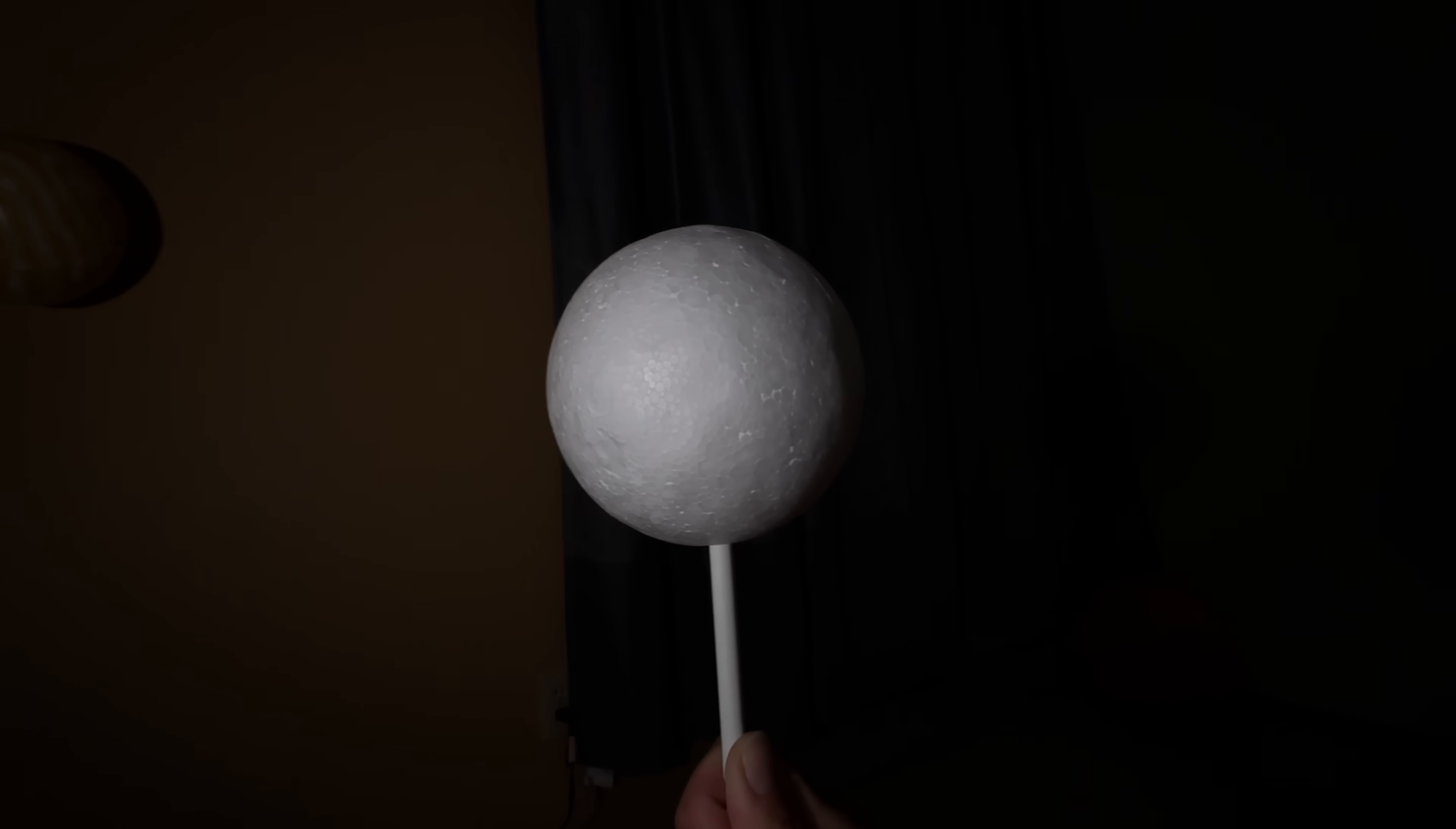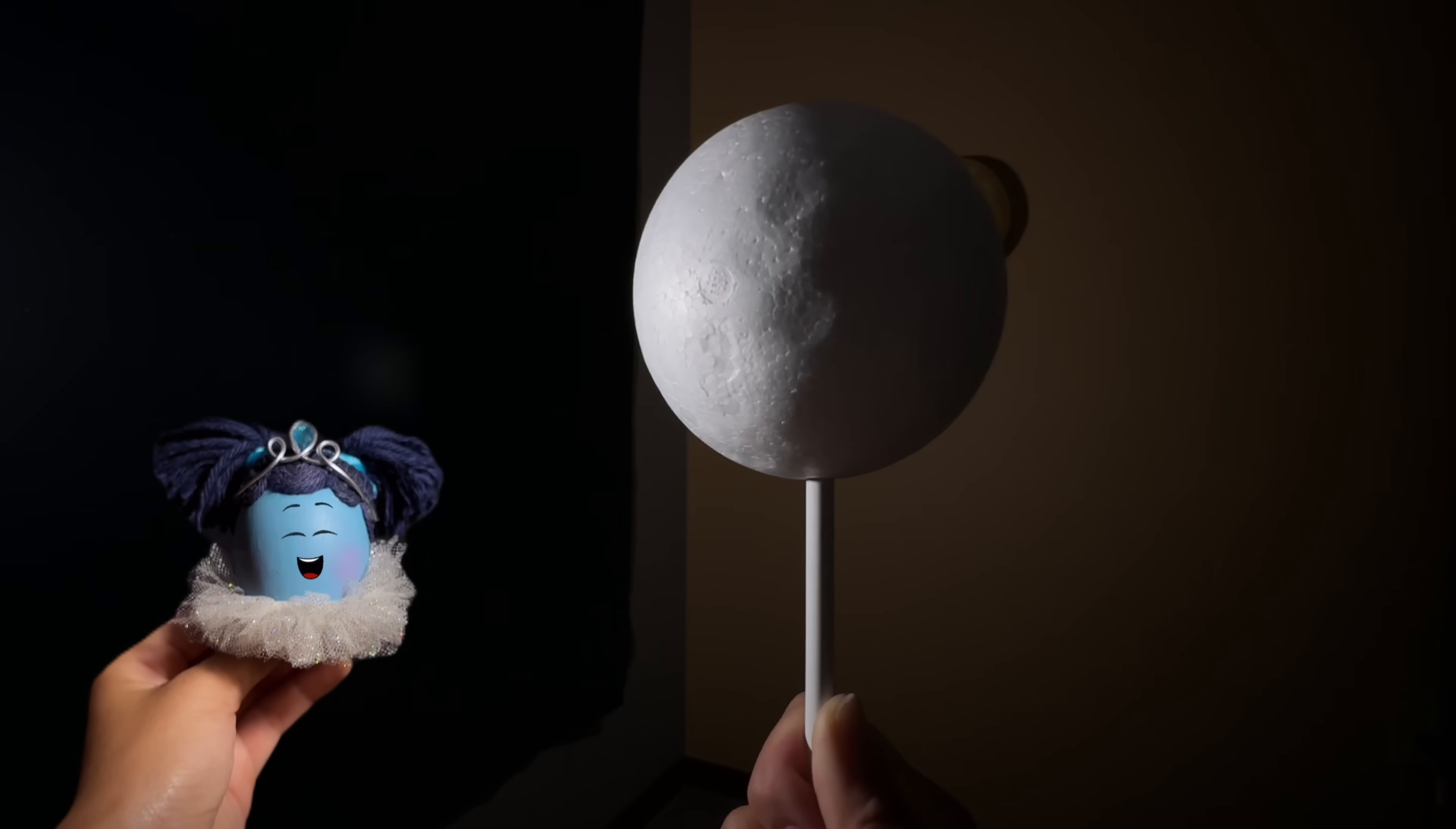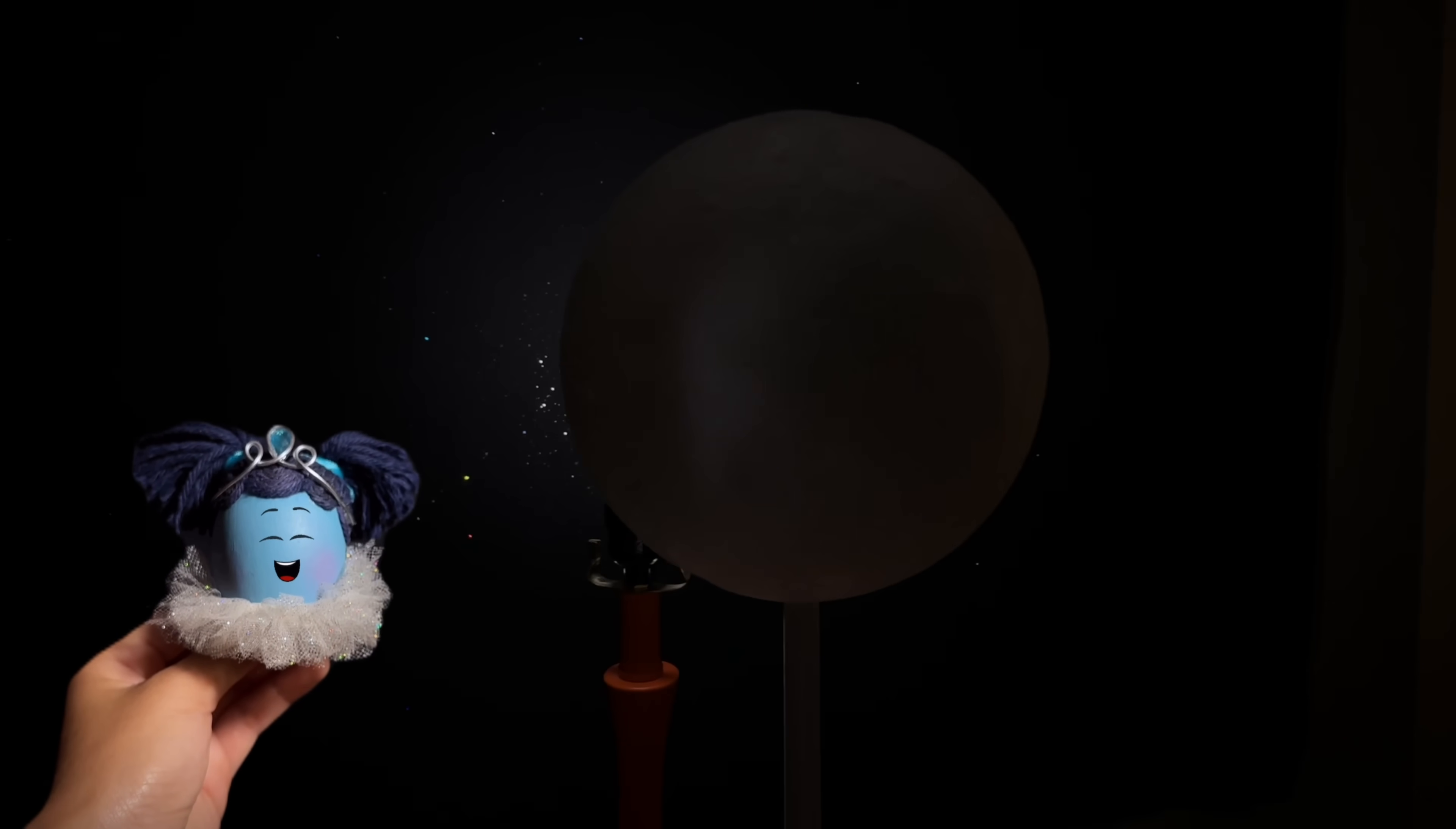After the full moon, it goes through the same cycle, but on the other side. From the gibbous moon, to the third quarter moon, and then a crescent moon, and finally, the new moon.